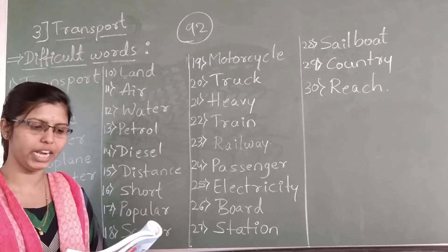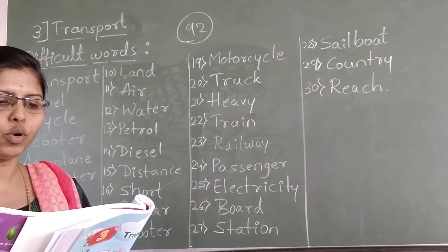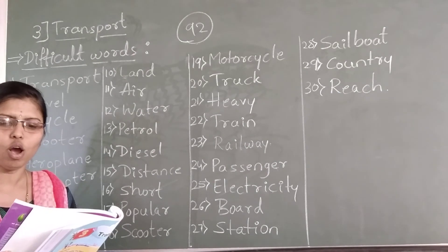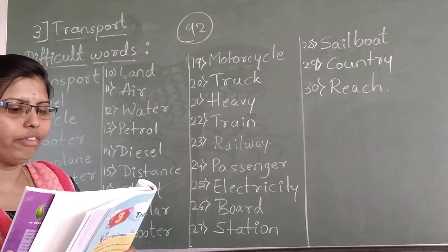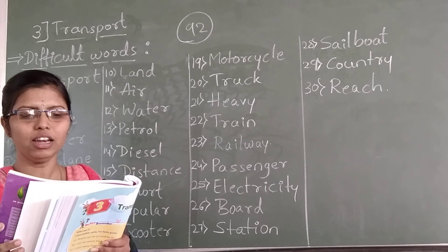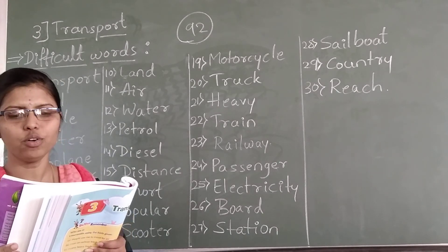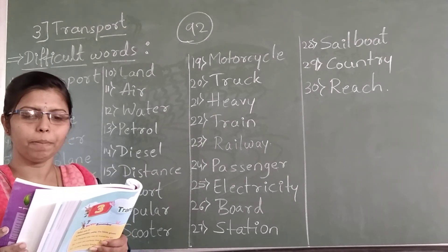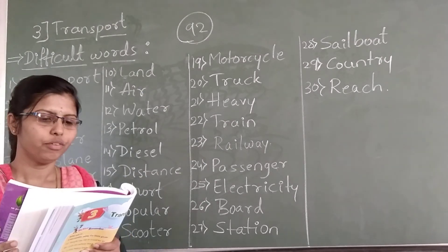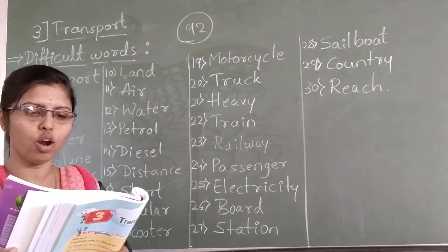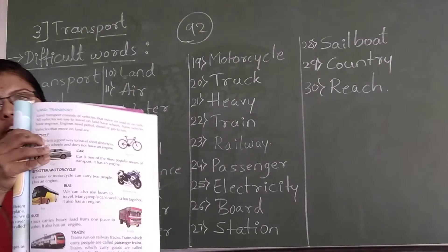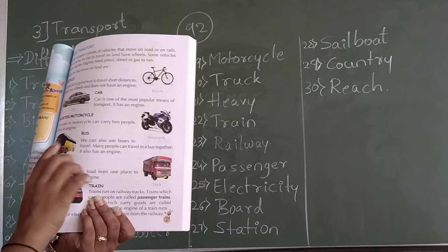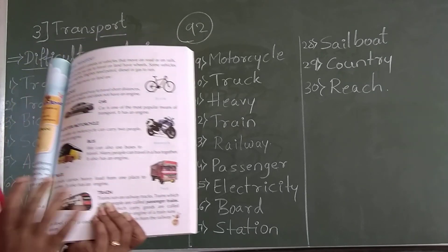The different means of transport can be grouped into three types: land transport, air transport, and water transport. See page number 93 — land transport. Land transport consists of vehicles that move on roads. All vehicles we use to travel on land have wheels. Some vehicles have engines. Engines need petrol, diesel, or gas to run. Vehicles that move on land are: bicycle, car, scooter, motorcycle, bus, truck, and train.